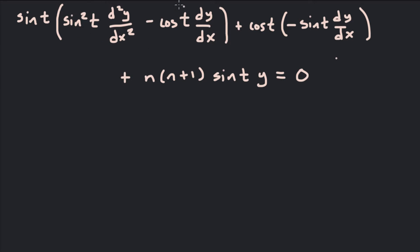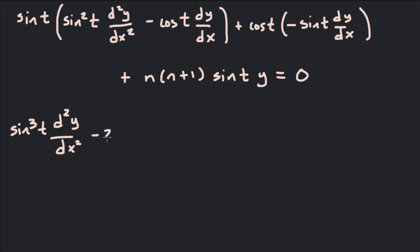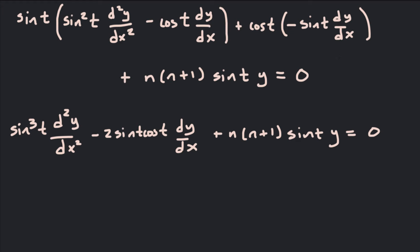So when we substitute the second derivative of y with respect to t into the equation, this is what we get. Now we want to do some simplification. The two cosine-containing terms combine into negative 2 sine t cosine t times dy/dx. So what we get is sine cubed t times d²y/dx² minus 2 sine t cosine t times dy/dx plus n times n plus 1 times sine t times y equals 0. Now we can divide through by sine t, of course assuming sine t is not zero.